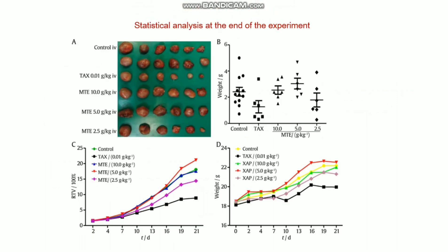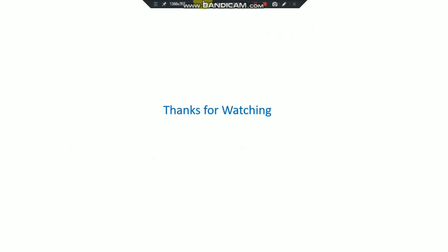At the end of the experiment, when you have all the data — tumor volume, tumor weight, and mice weight — you draw the graphs. You can also take photographs of the harvested tumors from the drug group and control group side by side for visual comparison. That's all about the xenograft tumor model. I hope this video is helpful. If you like this video, hit the like button, share it, and if you have any queries, write in the comment section. Thanks for watching.